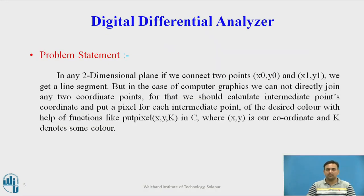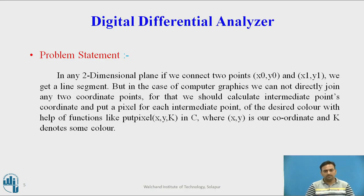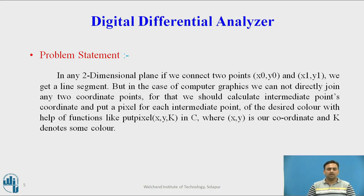We will see the Digital Differential Analyzer problem statement. In the plane, we are given two points: x0, y0 is the starting point and x1, y1 indicates the end point. We are going to join these points, but not directly — we have to go through the intermediate points and calculate the coordinates of those intermediate points in this DDA algorithm. To mark those pixels, we use the putPixel method, which takes three parameters: x, y coordinates and the color of the pixel.